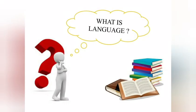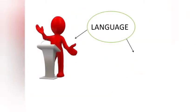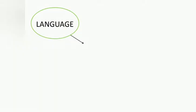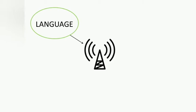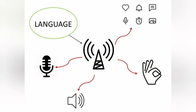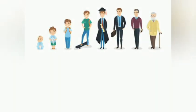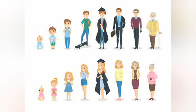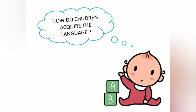Before we talk about the first steps in child language, it is better for us to know the meaning of language. What is language? Language is speech. Language is a vital part of human connection. A language is a structured system of communication that uses arbitrary signals such as voice sounds, gestures, or written symbols. Humans start to know and understand language since they were children. So, how do children acquire language?